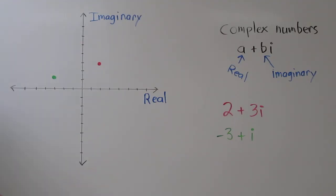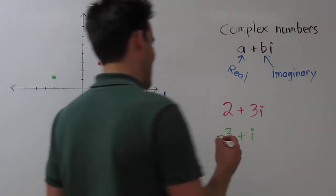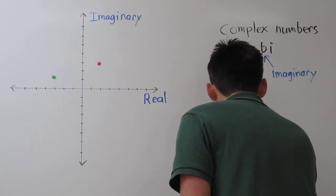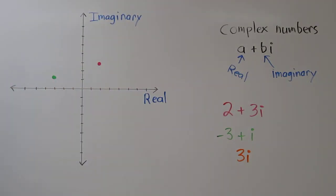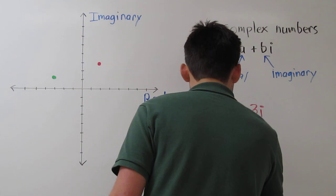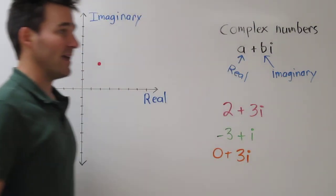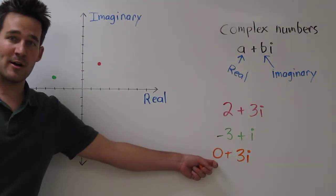Let's do one more in orange. How about 3i? Now this one looks like it doesn't have a real part, but it does. It's just 0. Because we could write this as 0 plus 3i.